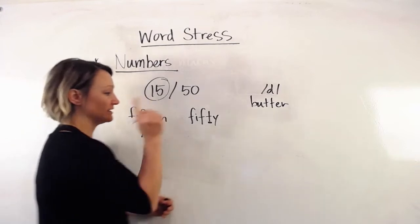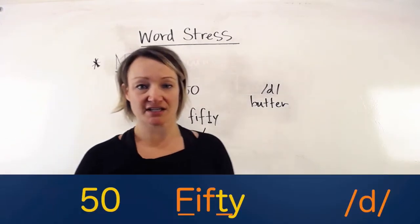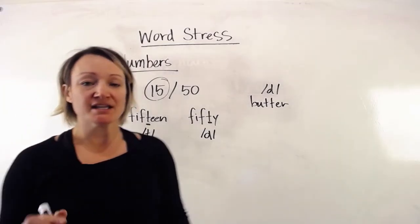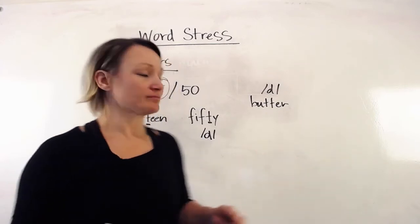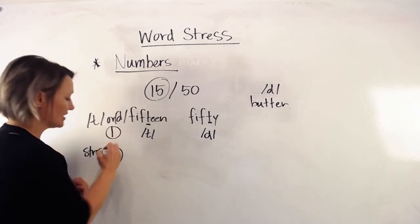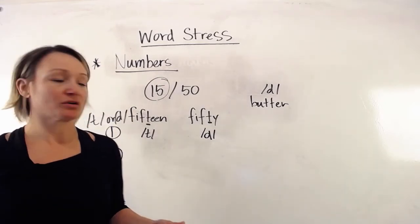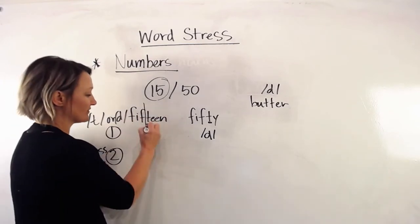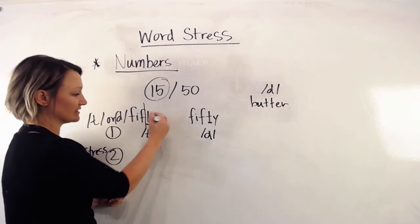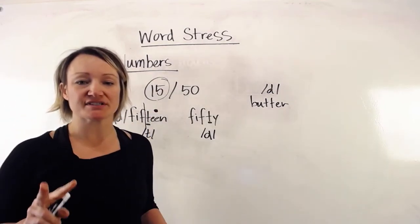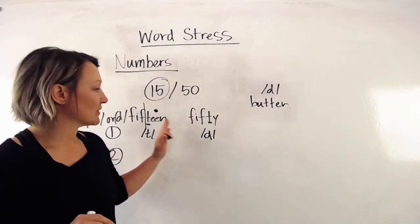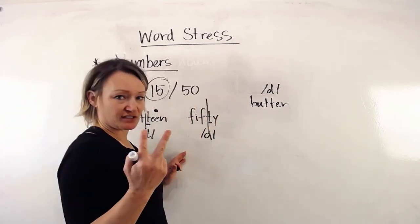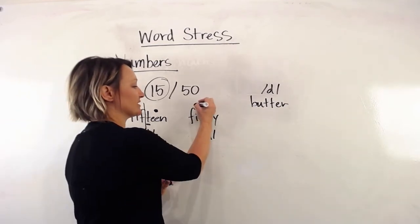For 50, it actually has a D sound — 'fifty.' The next way to know the difference is the stress. Notice: 'fifteen' has two syllables, and the stress is on the second syllable — 'fif-TEEN.' For 'fifty,' we also have two syllables, but the stress is on the first syllable — 'FIF-ty.'